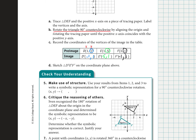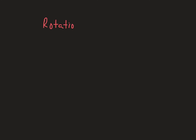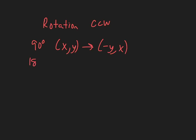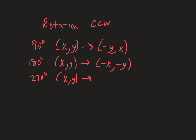Let's summarize the rotation rules one more time — keep these handy. For counterclockwise rotations: 90 degrees, (x, y) → (−y, x). 180 degrees, (x, y) → (−x, −y). 270 degrees, (x, y) → (y, −x). And 360 degrees, (x, y) → (x, y) — right back to the start. Apply the rule to each vertex, plot the points, and draw the rotated figure.